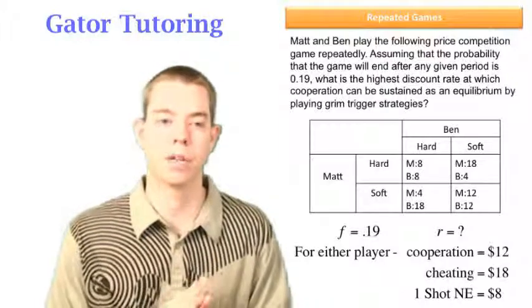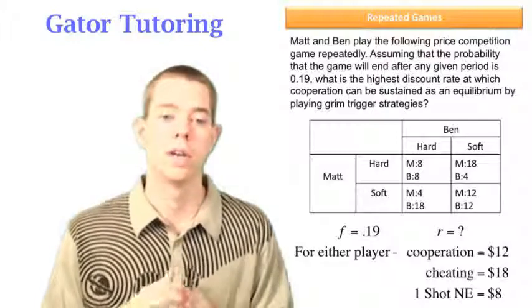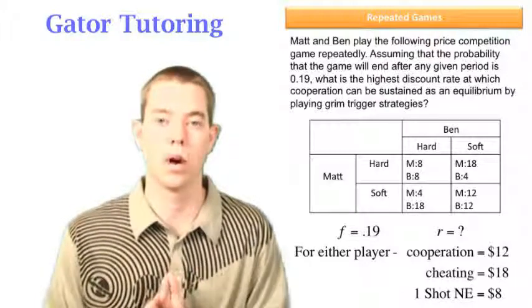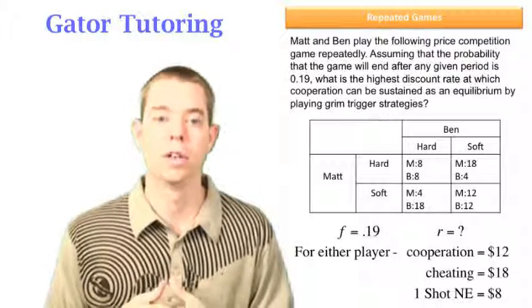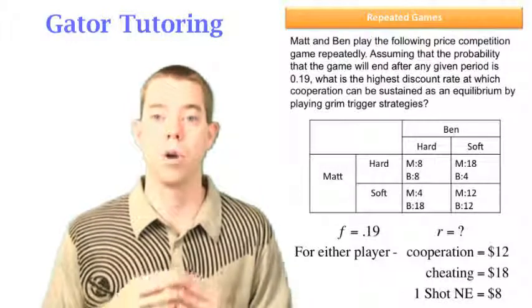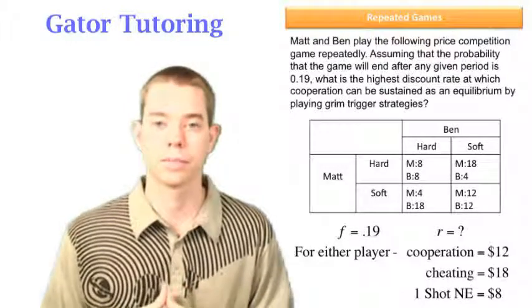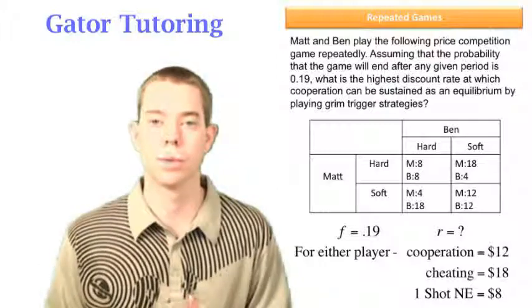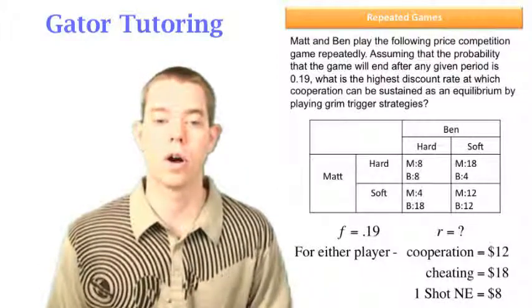Ben will do the same thing. If Matt plays hard, I'm going to choose eight over four. If Matt plays soft, I'm choosing 18 over 12. Ben also will always play hard. Because of that in the one shot game, they will always end up in the top left box. We call that our one shot Nash equilibrium. These are the three payments we need to know to solve this problem.